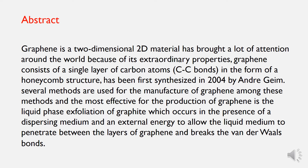Abstract: Graphene is a 2D material that has brought a lot of attention around the world because of its extraordinary properties. Graphene consists of a single layer of carbon atoms in the form of a honeycomb structure, and has been first synthesized in 2004. Several methods are used for the manufacture of graphene.